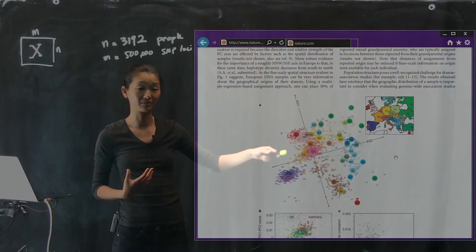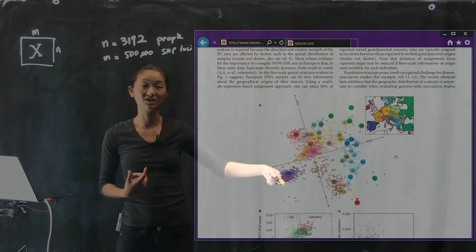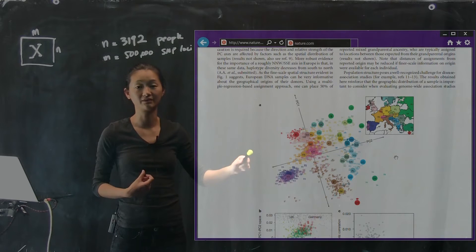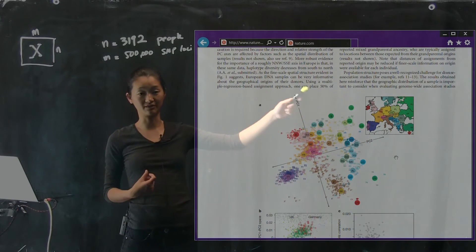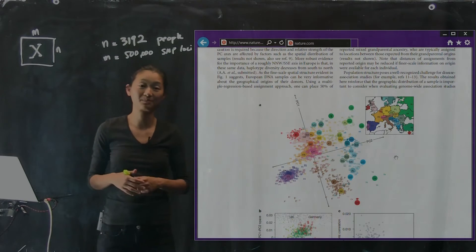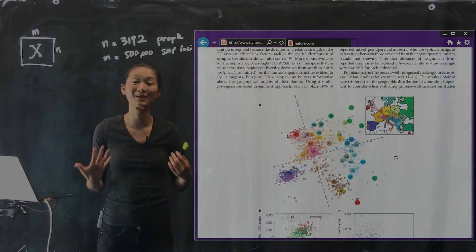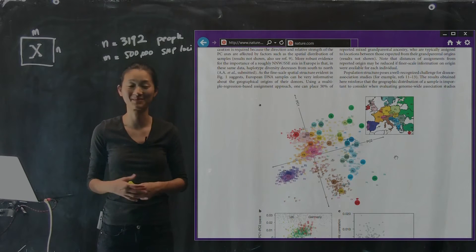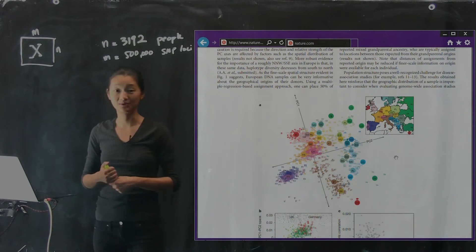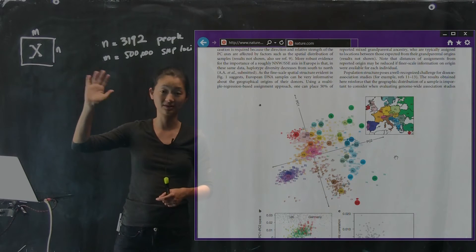So here, what we see is that the relative location of the dots in gene space is strikingly similar to the relative locations of the origin of these people in geography. And this sort of makes sense, right? This is something that we are probably simultaneously surprised by and also not so surprised by. It sort of makes sense.